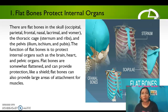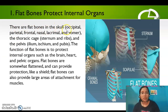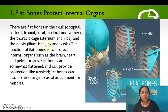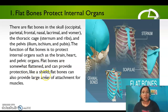First, let's identify flat bones, which protect internal organs. Flat bones in the skull include the occipital, parietal, frontal, nasal, lacrimal, and vomer. Other flat bones include the thoracic cage — the sternum and ribs — and the pelvis: the ilium, ischium, and pubis. Flat bones protect internal organs such as the brain, heart, and pelvic organs. They are somewhat flattened and provide protection like a shield, and can also provide large areas of attachment for muscles.